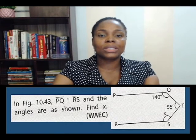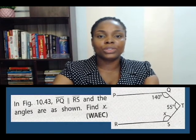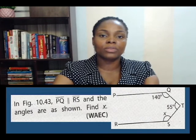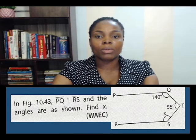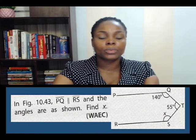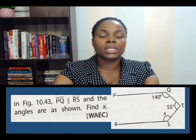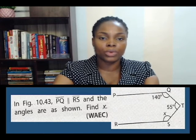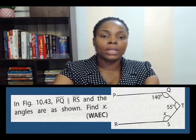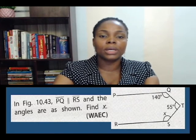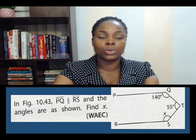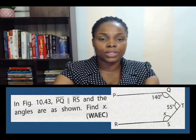This question is on page 168 of Functional Mathematics Book 1 by T.M. Acero et al. The question says: in figure 10.43, line PQ is parallel to line RS and the angles are shown. Find X.